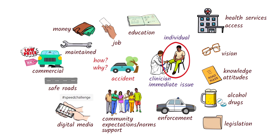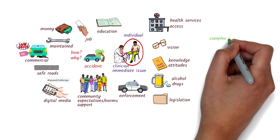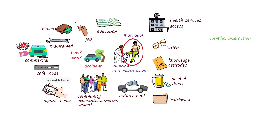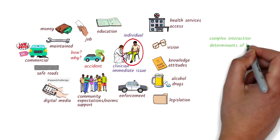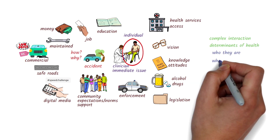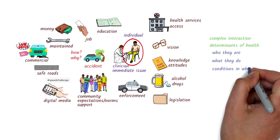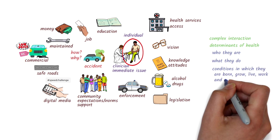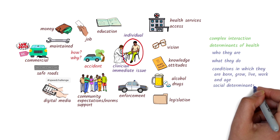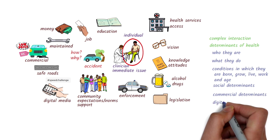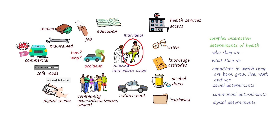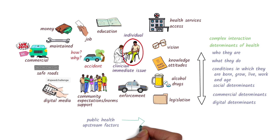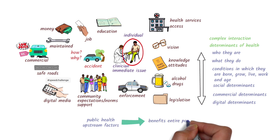As you can see from this example, health is determined by a complex interaction between many different factors, or determinants of health. These include who they are, what they do, and the conditions in which they're born, grow, live, work, and age — the social determinants of health. It also includes commercial and digital determinants of health. So to make a difference in health, it's important to understand these determinants and how they interact with each other in order to address them. Public health focuses on upstream factors to make changes that can benefit the health of the population as a whole.